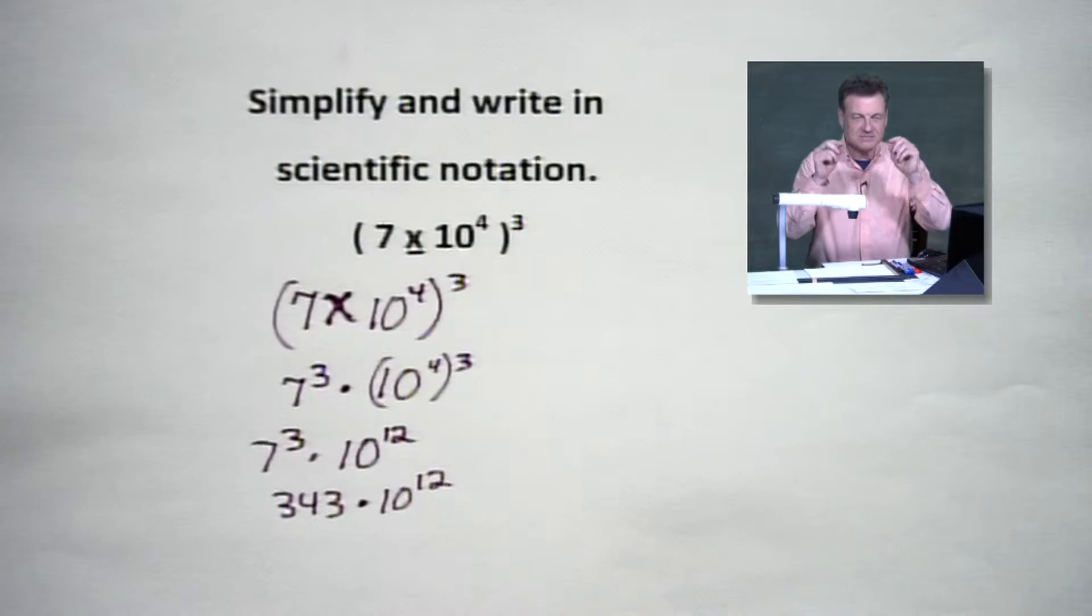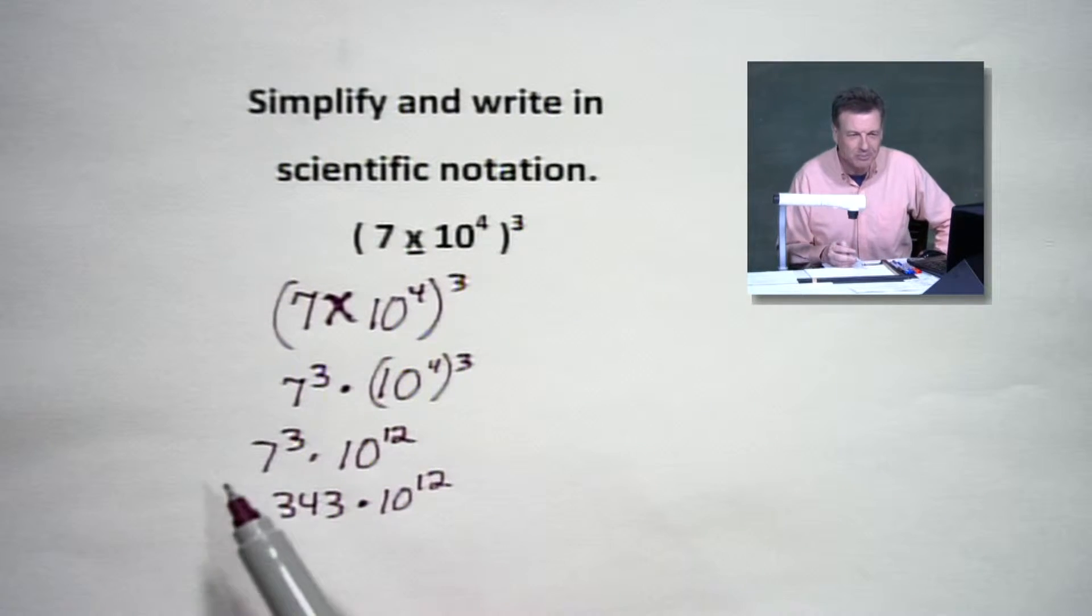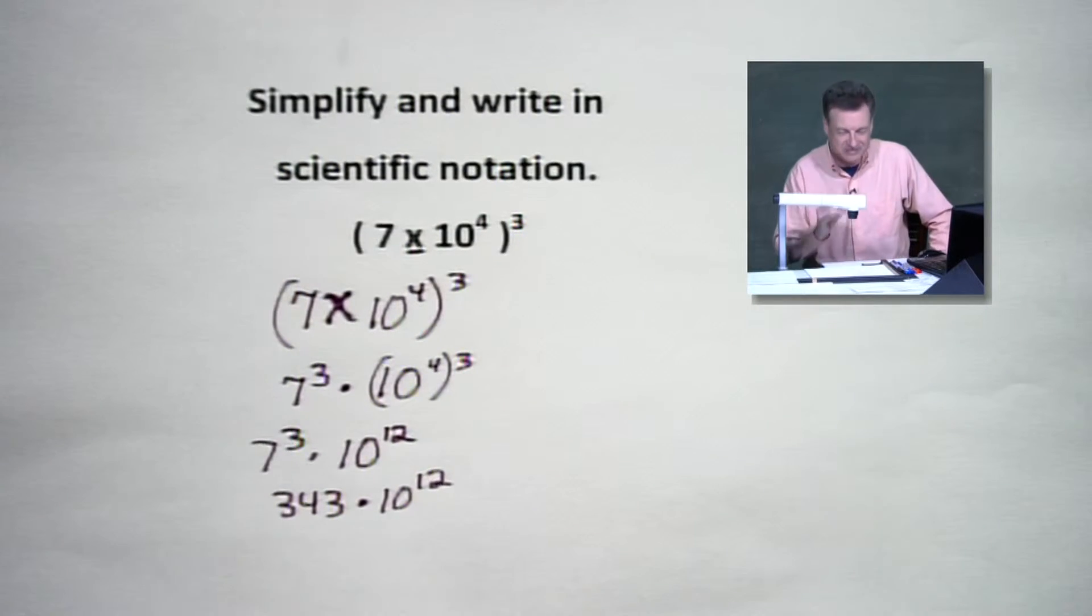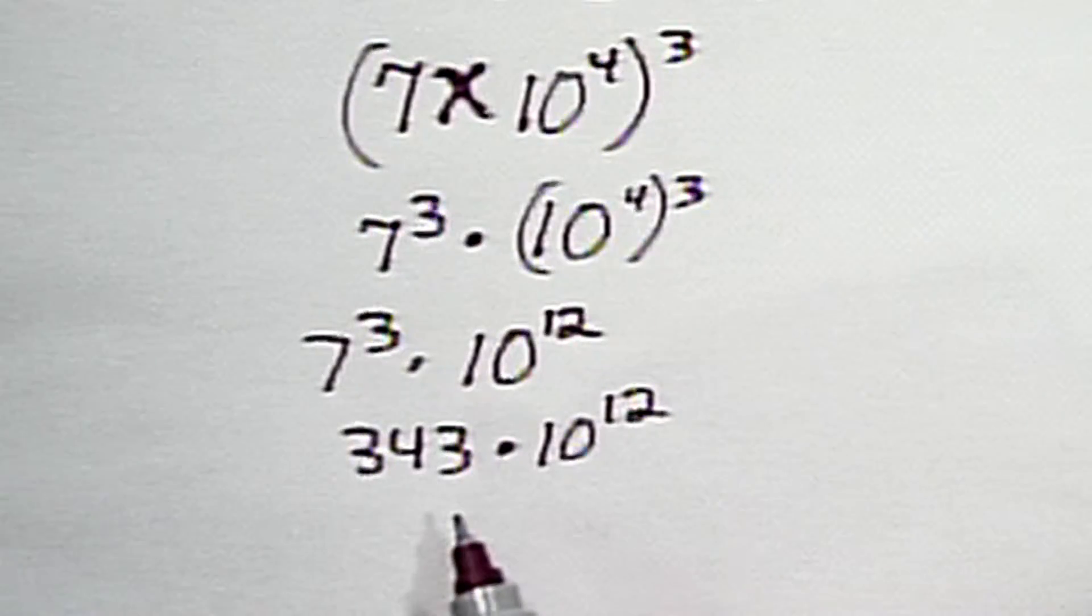Once again, that's seven times seven times seven. That ain't twenty-one, people. That is seven times seven times seven, which is going to give us 343. Now, the problem is it's not totally simplified yet.